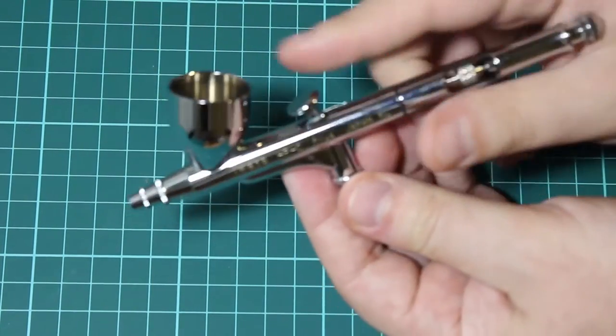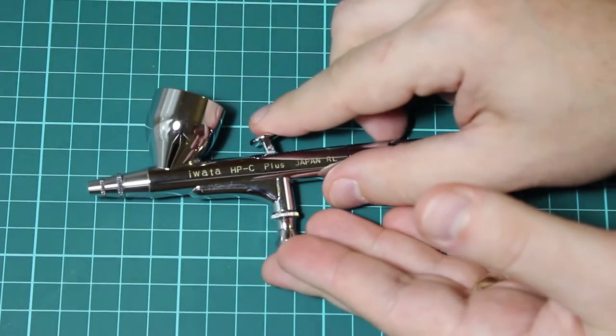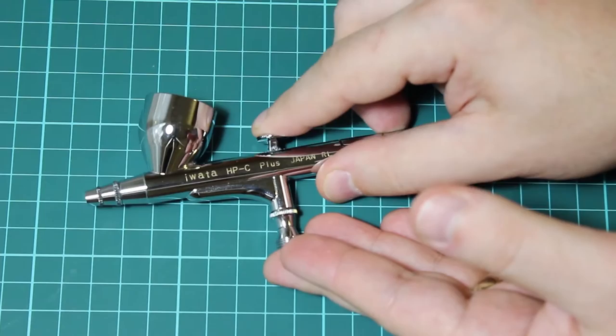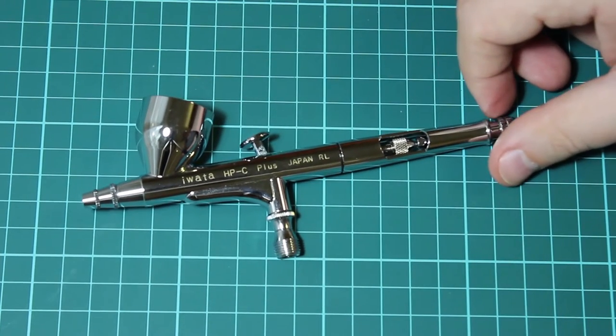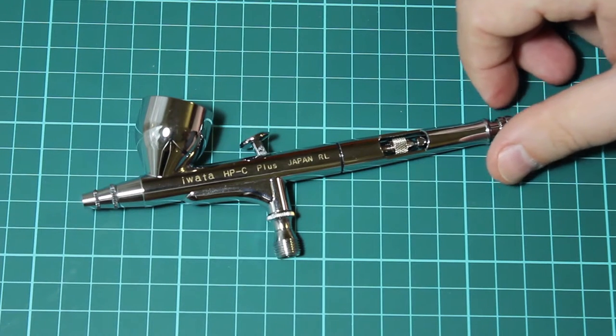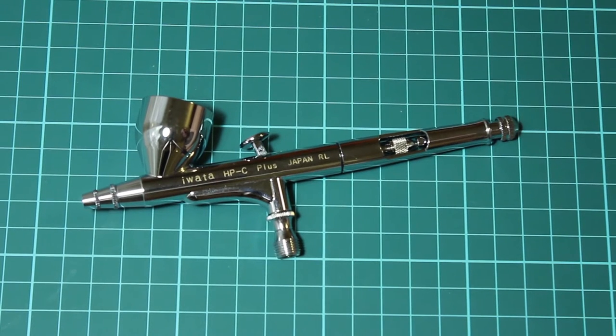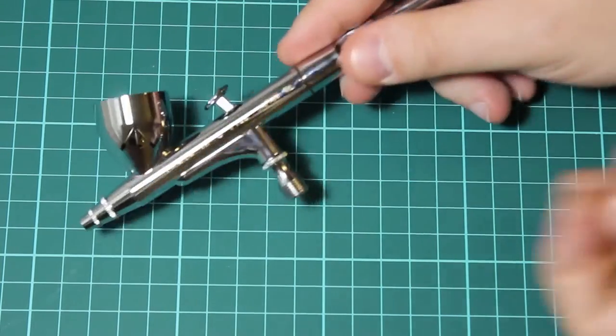The trigger is a bit stiff especially compared to Harder and Steenbeck but I prefer it that way. There is a corrugation on top of it for better grip and in general sits very well in your hand. I do prefer heavy triggers just because I feel more in control. If you have a steady hand you might prefer Harder and Steenbeck triggers which are light as a feather however this one suits me better.